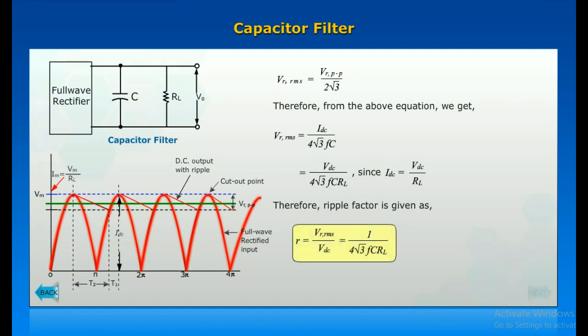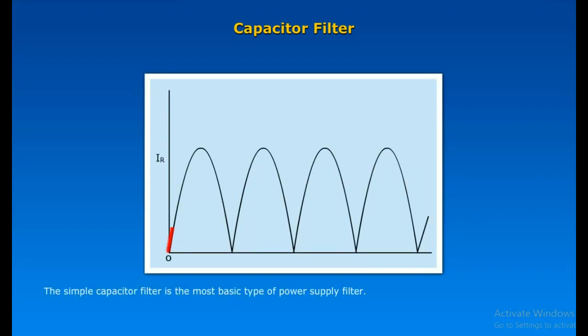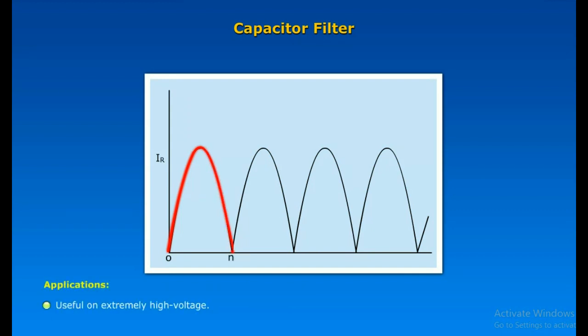Capacitor filter: The simple capacitor is the most basic type of power supply filter. Applications: useful on extremely high voltage, low current power supplies for cathode ray and similar electron tubes. Requires very little load current from the supply.